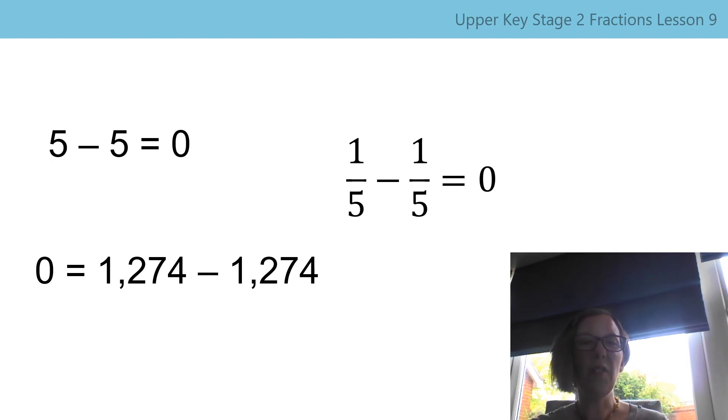So as you can see there is a fraction calculation there. If we have one fifth, one part out of the 5 and we take that part away, the difference is 0. We've taken the same amount away. And the same on the final equation at the bottom there, 1,274. If you take away the 1,274, we have 0. You're with me so far? Brilliant.